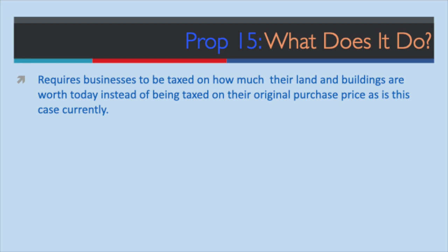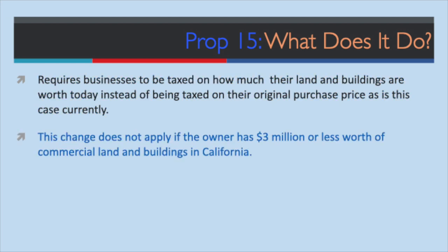Housing and agricultural land continues to be taxed based on its original purchase price. Second, Prop 15 does not apply if the owner has $3 million or less worth of commercial land and buildings in California, adjusted for inflation every two years. Those properties continue to be taxed at their original purchase price.